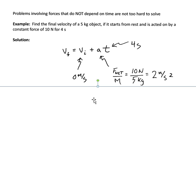In this particular example, the initial velocity is 0 meters per second because we're told that the object starts from rest. We know that the time is 4 seconds, and we can go back to Newton's second law to calculate the acceleration. If the force is 10 newtons and the mass is 5 kilograms, that's an acceleration of 2 meters per second squared.